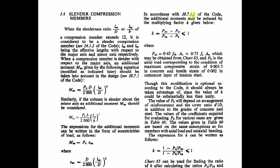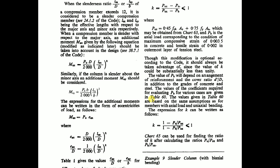In accordance with clause 38.7.1.1 of the code, we can further reduce the additional moments by multiplying by the factor k. The k value is calculated as: k = (Puz − Pu) / (Puz − Pb), which should be less than or equal to 1. Here Puz = 0.45·fck·Ac + 0.75·fy·Asc, which may be obtained from Chart 63. Pb is the axial load corresponding to the condition of maximum compressive strain of 0.0035 in concrete and tensile strain of 0.002 in the outermost layer of tension steel. This can be further written as k = (1 − Pu/Puz) / (1 − Pb/Puz) ≤ 1. Chart 65 can be used to find k after calculating the ratios Pu/Puz and Pb/Puz.